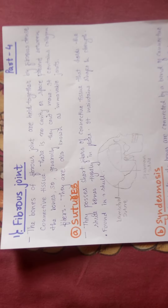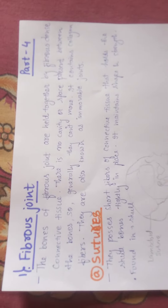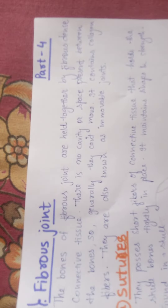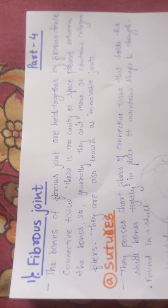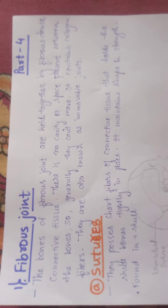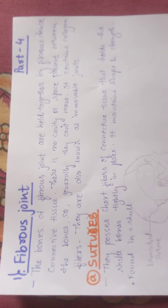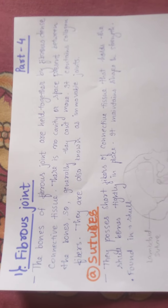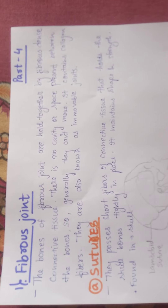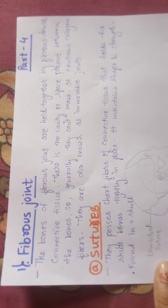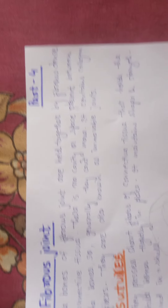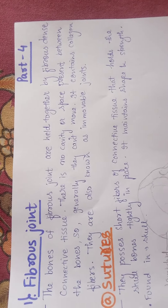The fibrous joint is held together by fibrous, dense connective tissue. There is no cavity or space present between the bones, so generally they can't move. It contains collagen fibers. They are also known as immobile or immovable joints. The bones involved in the fibrous joint are joined together by fibrous connective tissue — they are so tightly joined together.